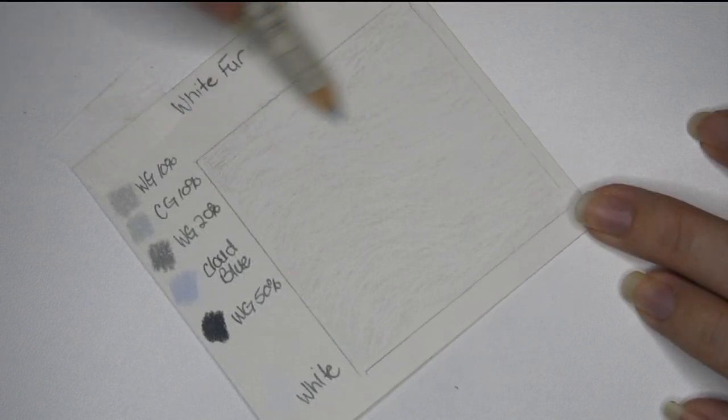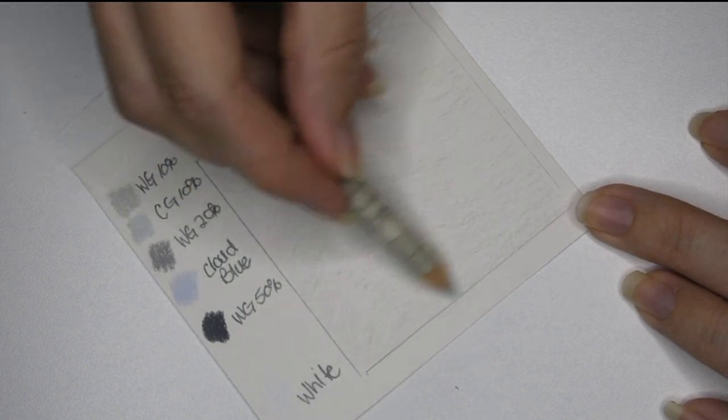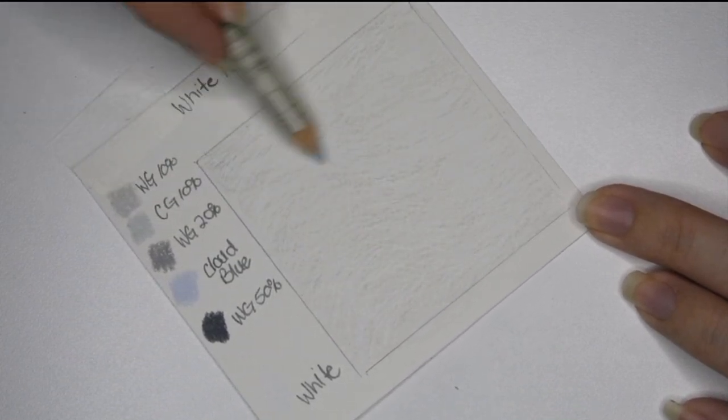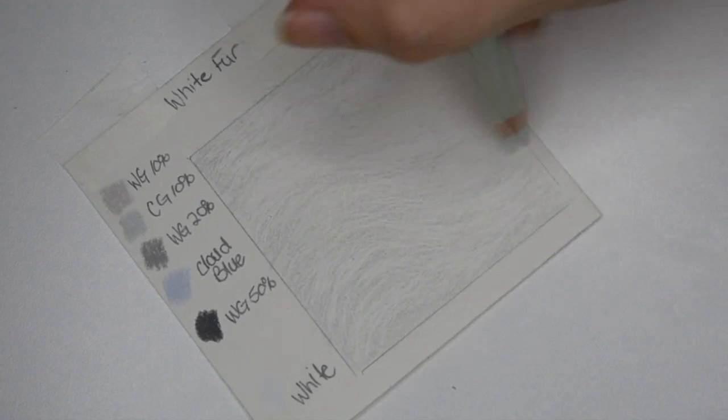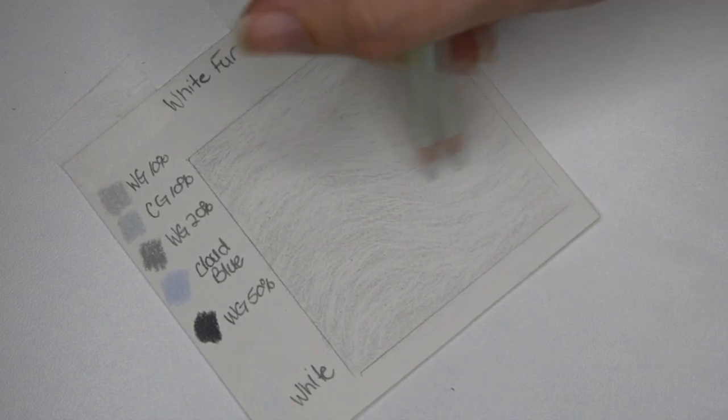Then using a light touch and going in the fur direction, I'll be layering warm gray 10% all over and cool gray 10% for the base layers. I tried to put the cool gray in the darker fur patches only. At this point you should be able to see your fly away fur and see where you put down your white pencil.